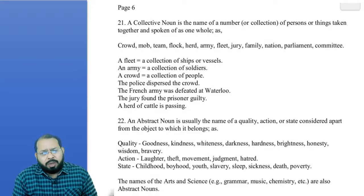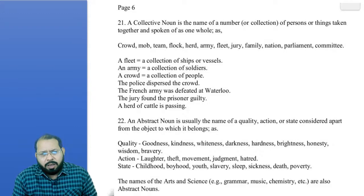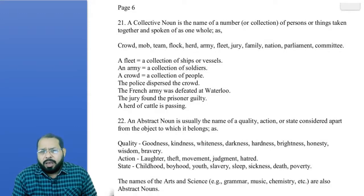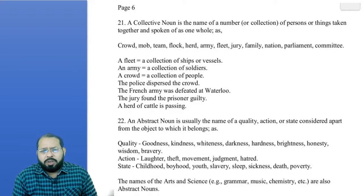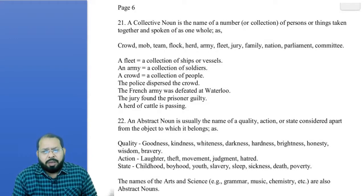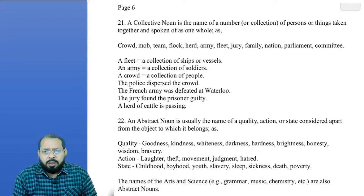An abstract noun is the name of a quality, action, or state. Examples of quality include: goodness, kindness, whiteness. An abstract noun is the name of a quality, action, or state — things that cannot be seen or touched.